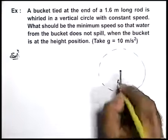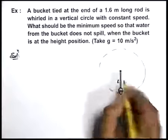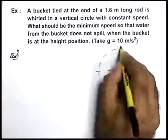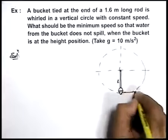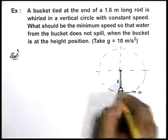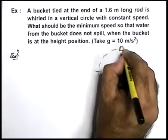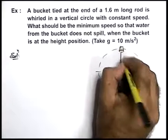Say the rod is of length l, the bucket is revolving in a circle of length l. In this situation if the bucket is having a constant speed v, when it reaches the topmost position, the situation would be this.